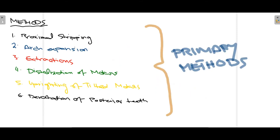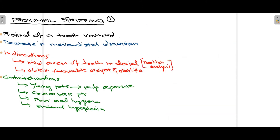The six primary methods used to gain space are: proximal stripping, arch expansion, extraction, distalization of molars, uprighting of tilted molars, and derotation of posterior teeth. We will talk about each one in detail.